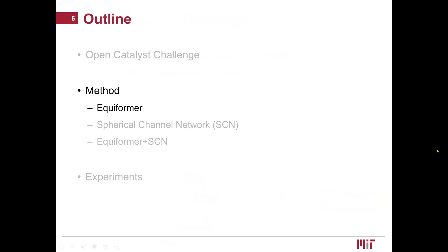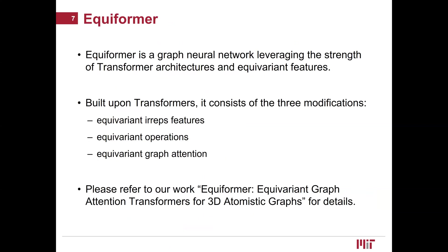Our method for this challenge consists of three parts: Equiformer, Spherical Channel Network (SCN), and combining Equiformer and SCN. Equiformer is a graph neural network leveraging the strengths of transformer architectures and equivariant features. Based on typical transformers in natural language processing and computer vision, we introduce three modifications: equivariant irreps features, equivariant operations, and equivariant graph attention. Please refer to our work, Equiformer: Equivariant Graph Attention Transformers for 3D Atomistic Graphs, for further details.